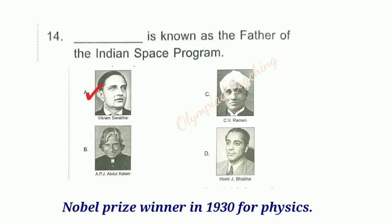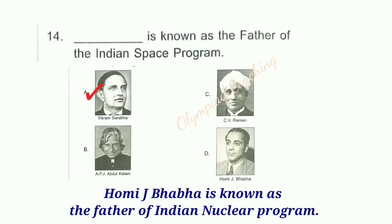Option C — C.V. Raman — was a Nobel Prize winner in 1930 for Physics. Option D — Homi J. Bhabha — is known as the father of the Indian nuclear program.